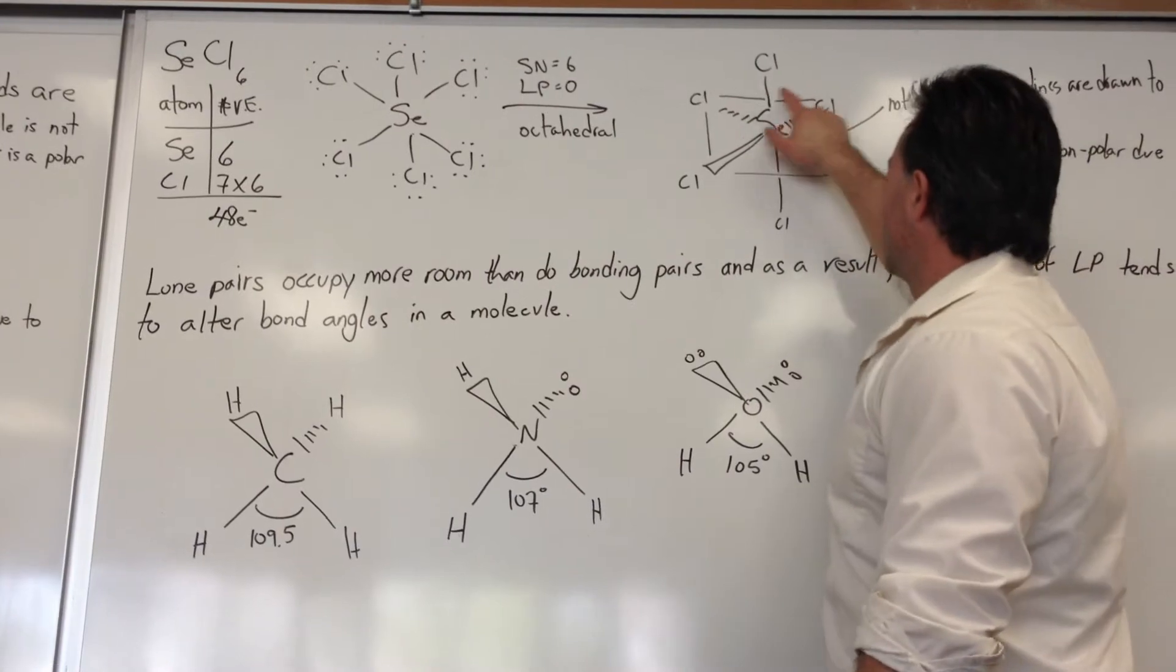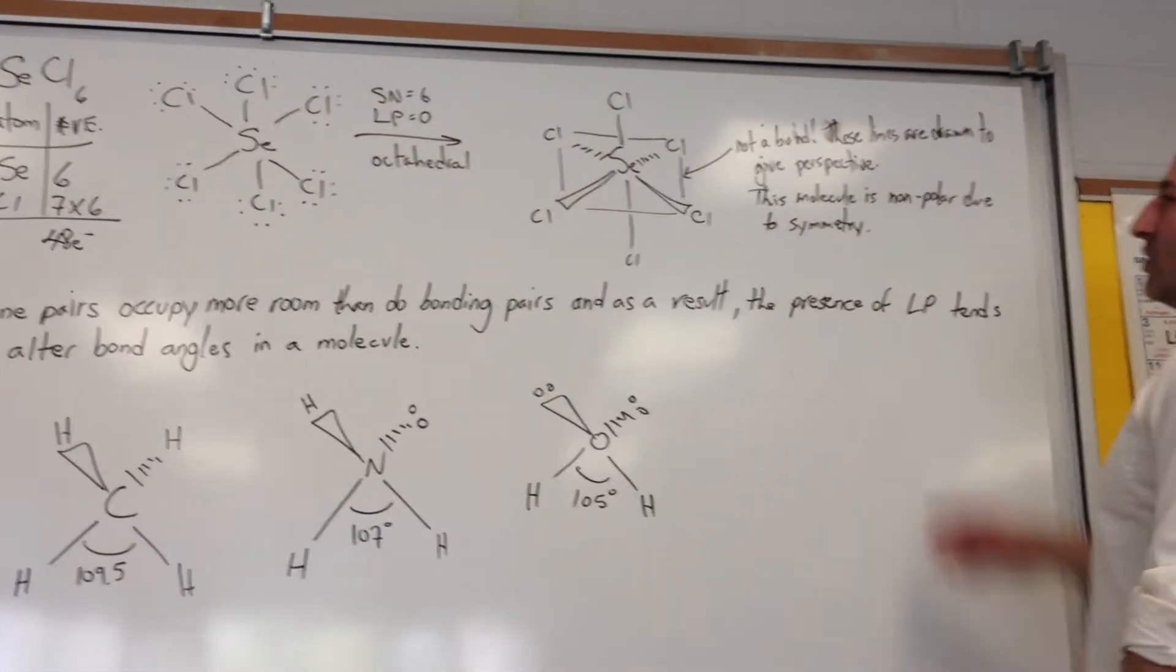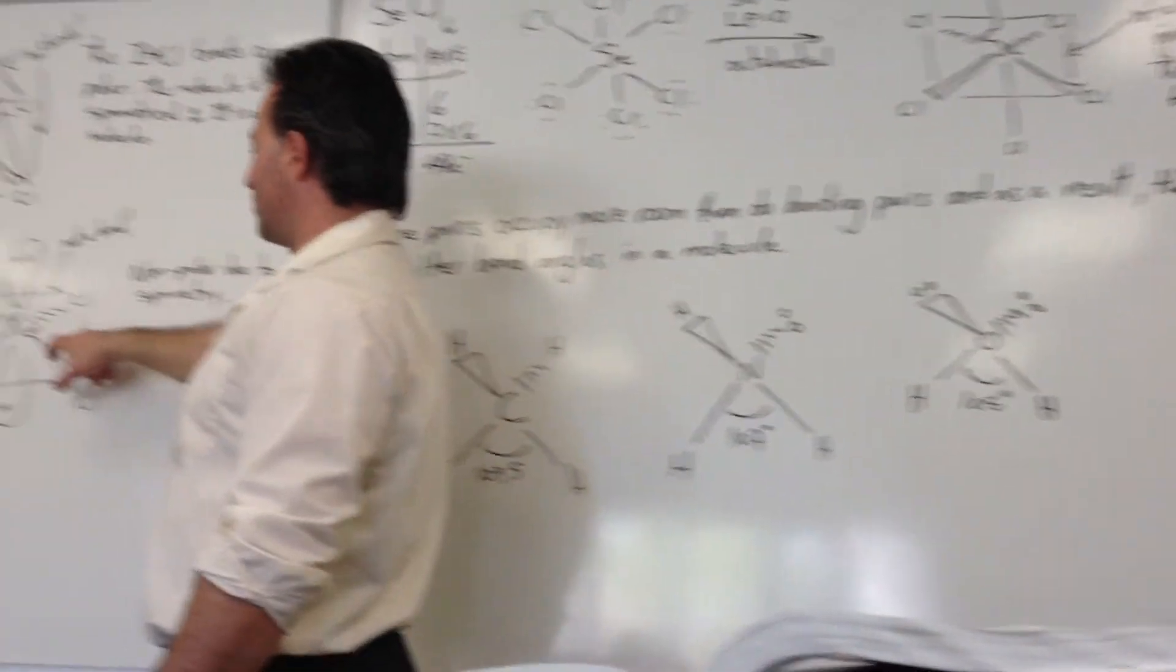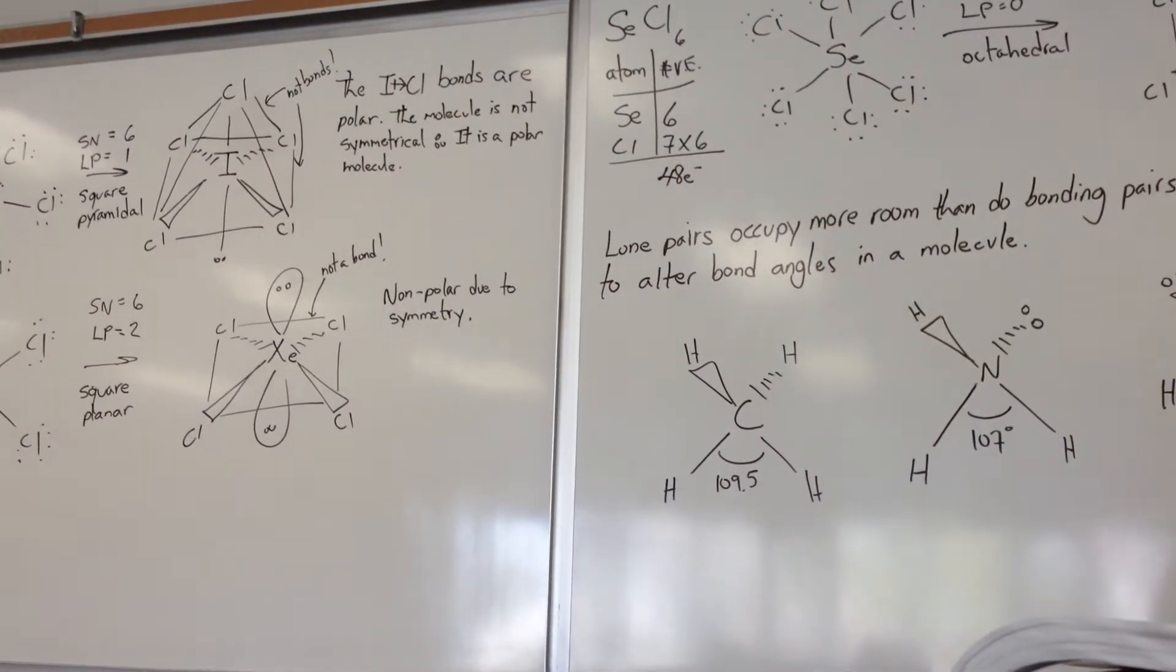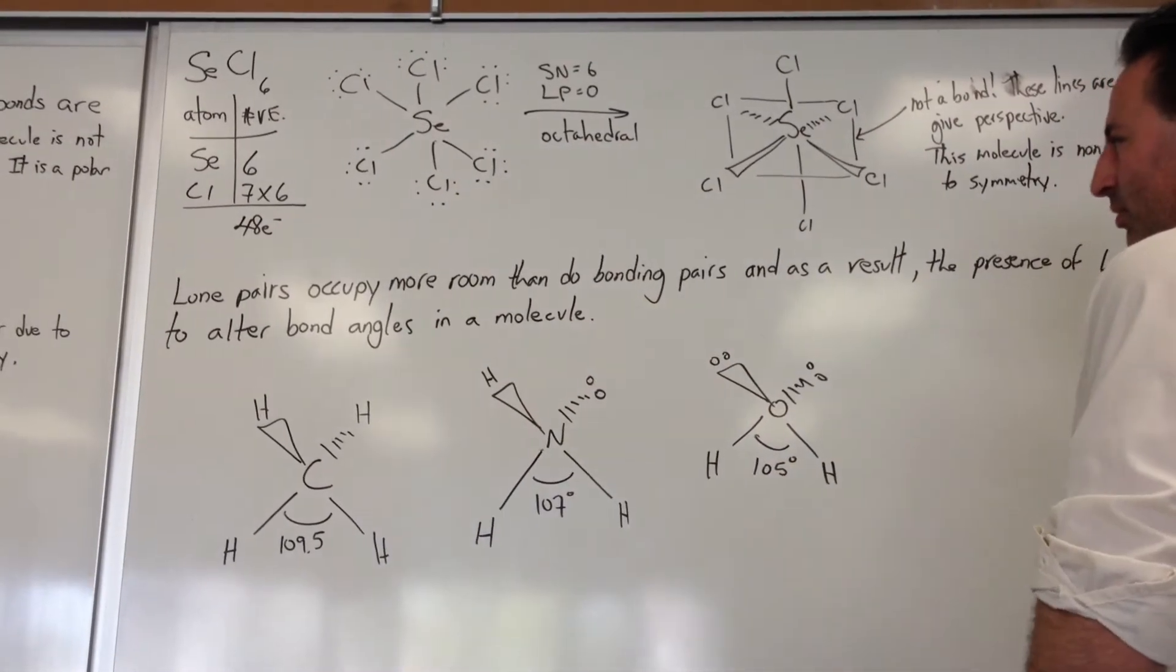Again, these are not bonds. They're just perspective lines to show you the geometry of the molecule. This molecule is also nonpolar due to symmetry. Xenon tetrachloride is also nonpolar due to symmetry, cancelling out the polarity of the bonds. The bonds remain polar. It's just that overall the molecule itself is nonpolar.